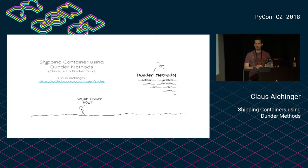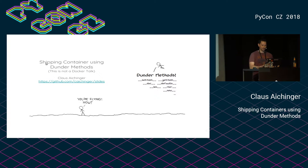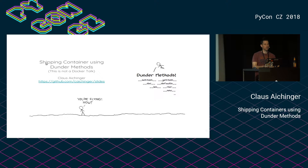This talk will be about Dunder methods, what they are and how they can be used. It's a new talk for me in the sense that there are slides, but I will also try to do some live coding, so please be patient with me. We are really focusing on Python containers and collection types and how they are related to double underscore methods.